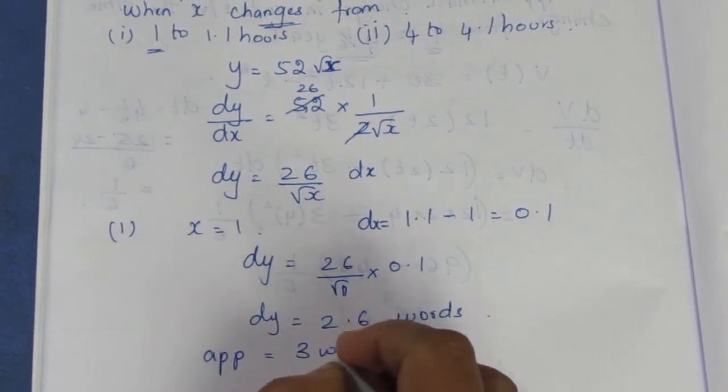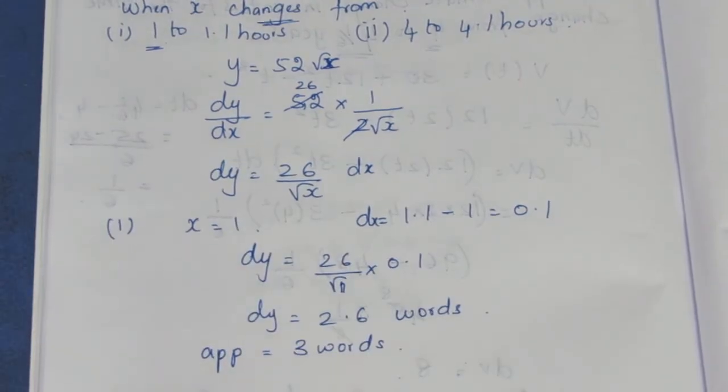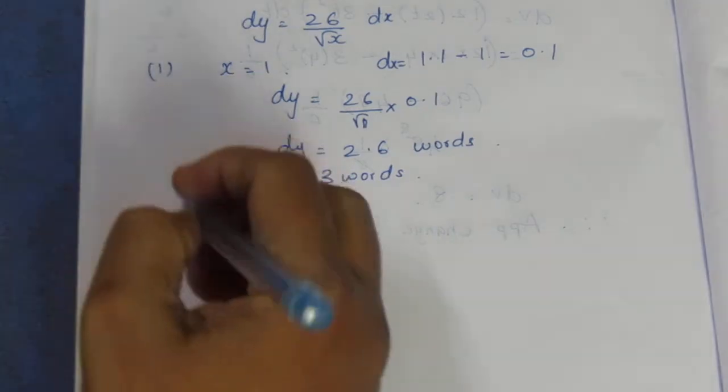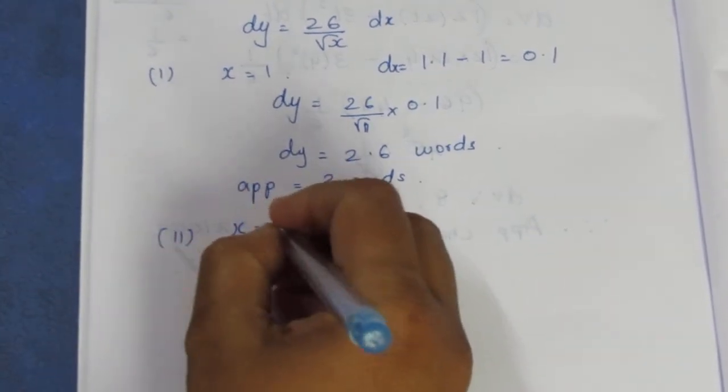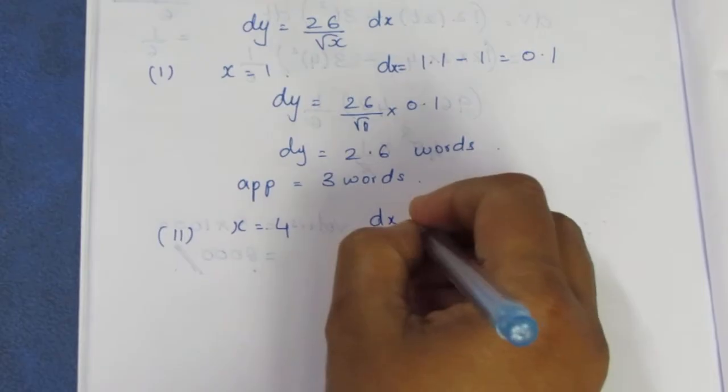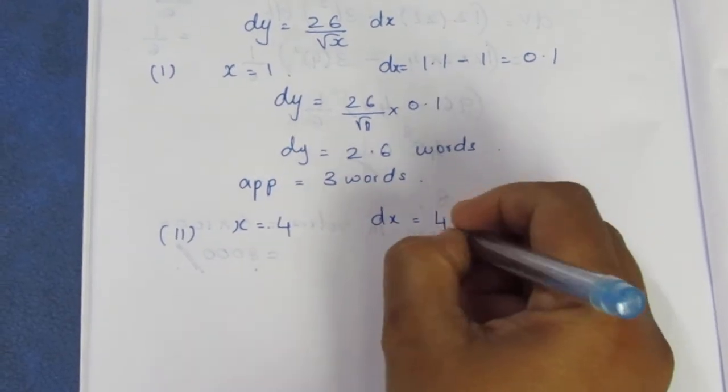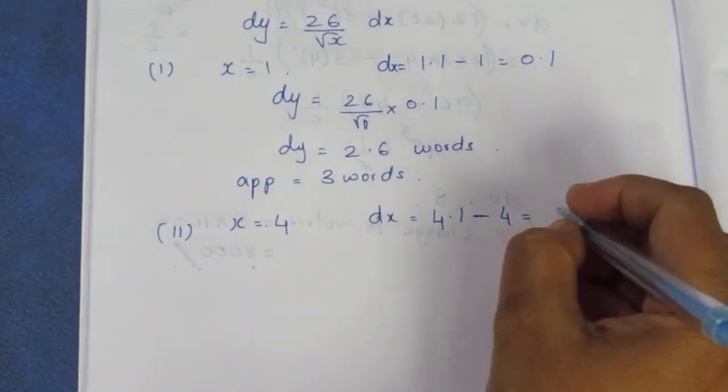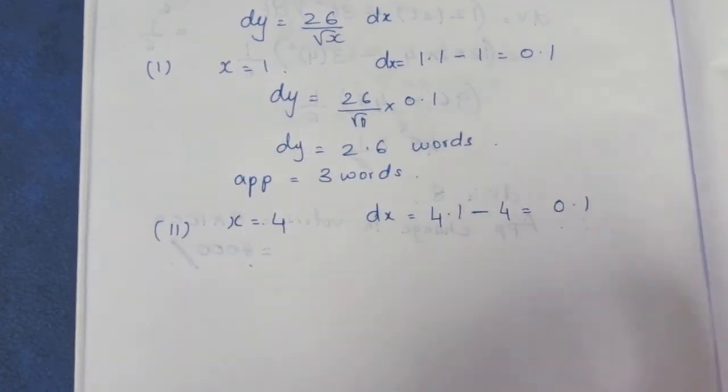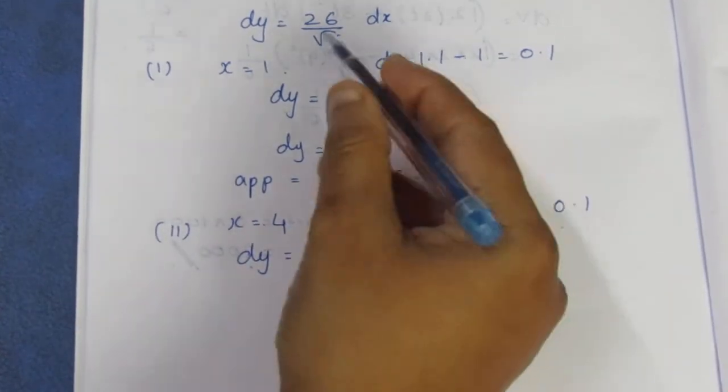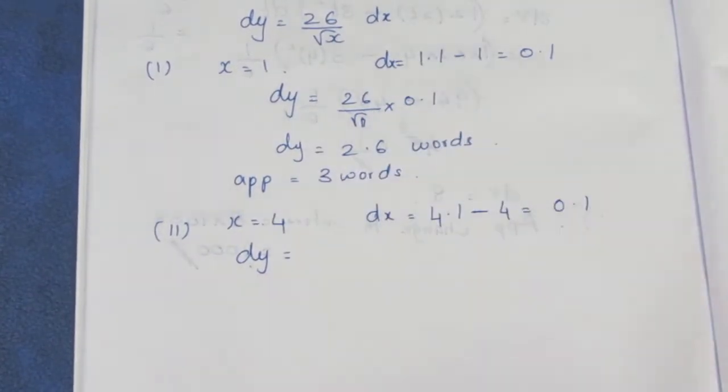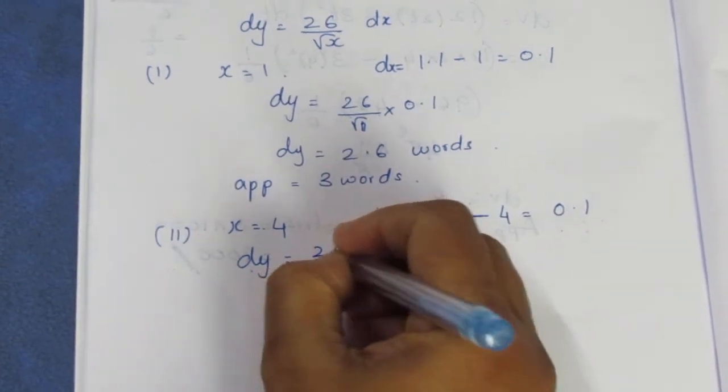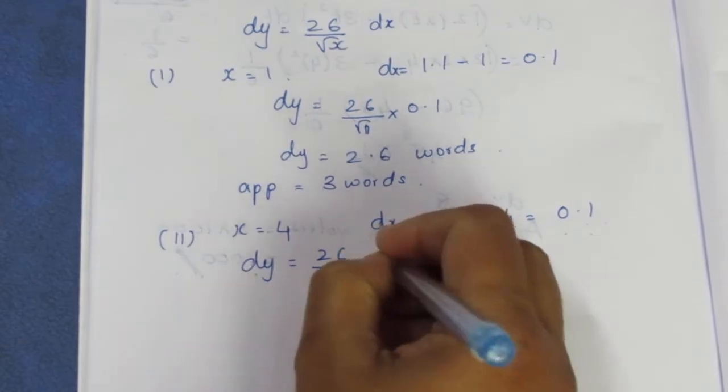For the second case, x = 4 and dx = 0.1, which is 4.1 - 4 = 0.1. Substituting: dy = (26/√4) × 0.1.